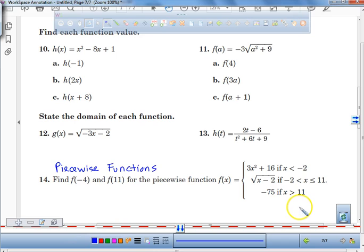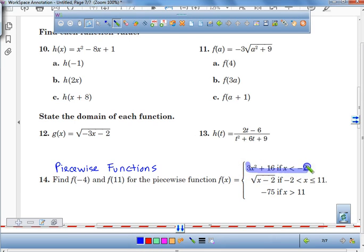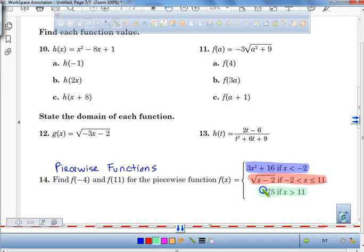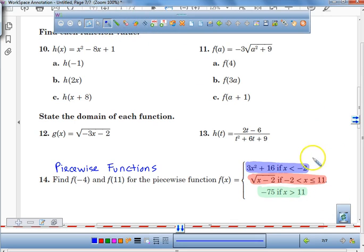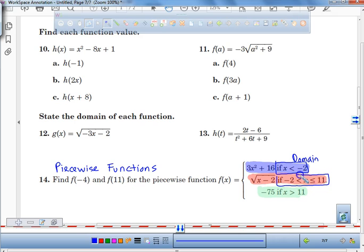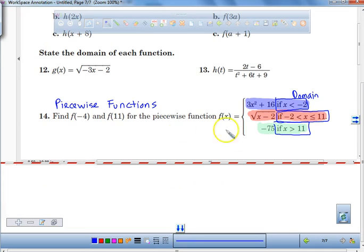All right, piecewise functions. Now this might be a little intimidating. This is in function notation right here, but I want you guys to understand that we have this piece of a function, this piece, and finally this piece. Three different equations. Now what you guys need to realize is over here, see where it says if, if, and if? This is talking about if the domain meets this condition or this condition or this condition. So look really closely at the domain every single time. The domain will tell you which function to use.